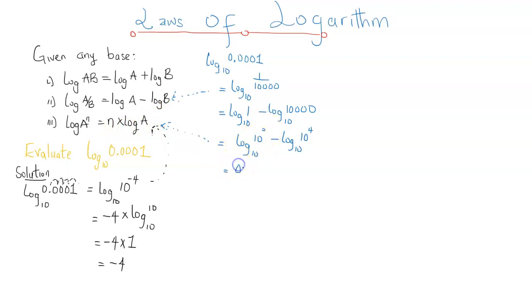So this is just going to be 0 log 10 to base 10 minus, right here n is 4 and a is 10, comparing with the third law, so this is going to be 4 log 10 to base 10.